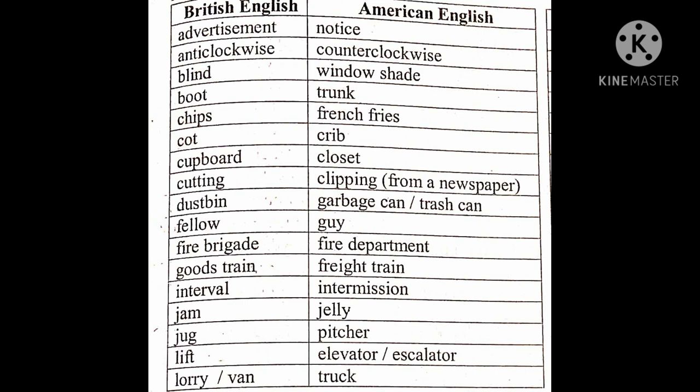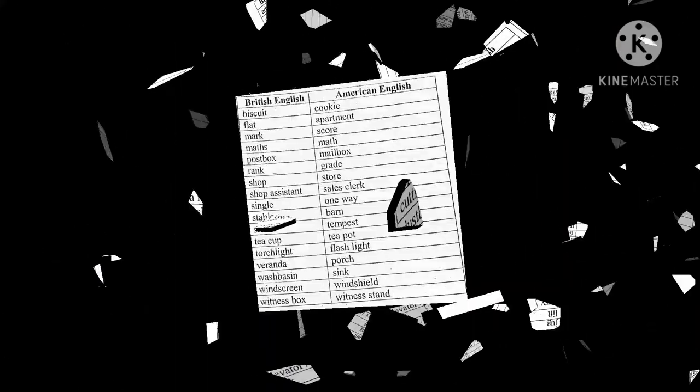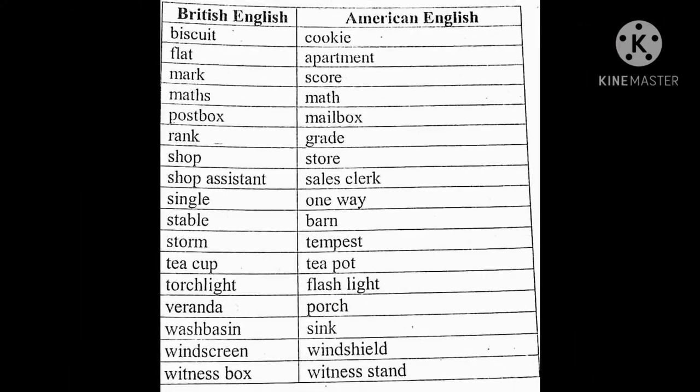Jug — pitcher. Water jug becomes pitcher. Lift — elevator or escalator. Lorry or van — truck. Biscuit — cookie. Flat — apartment. A flat or multi-storied building, Americans call it an apartment. Mark — score. 'What is your mark in English?' becomes 'What's your score in English?'